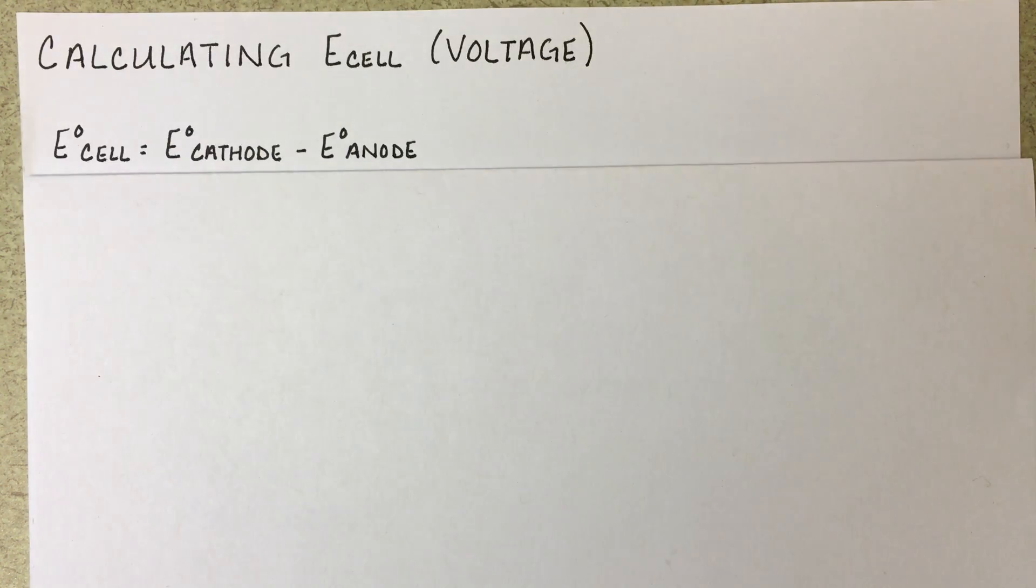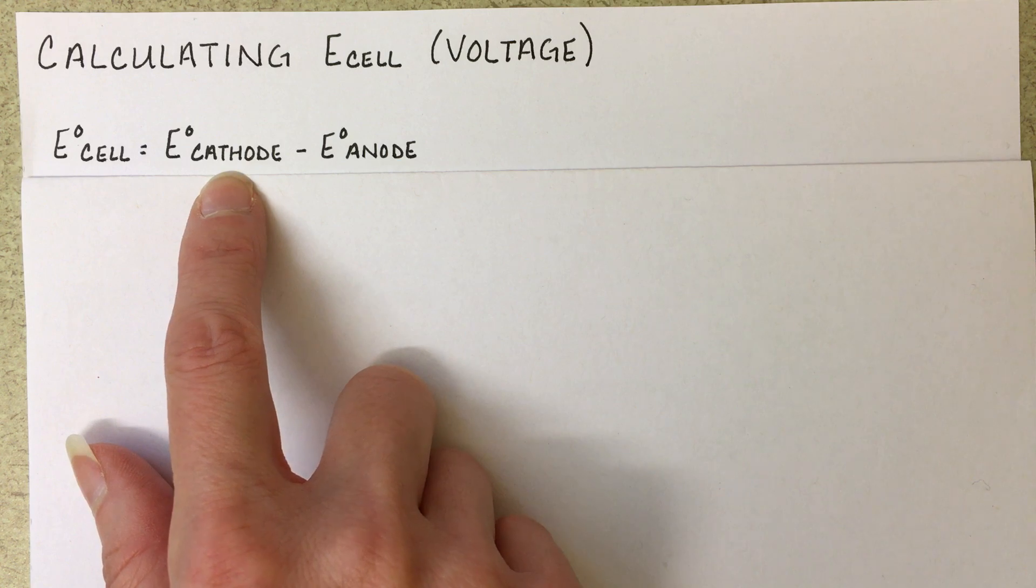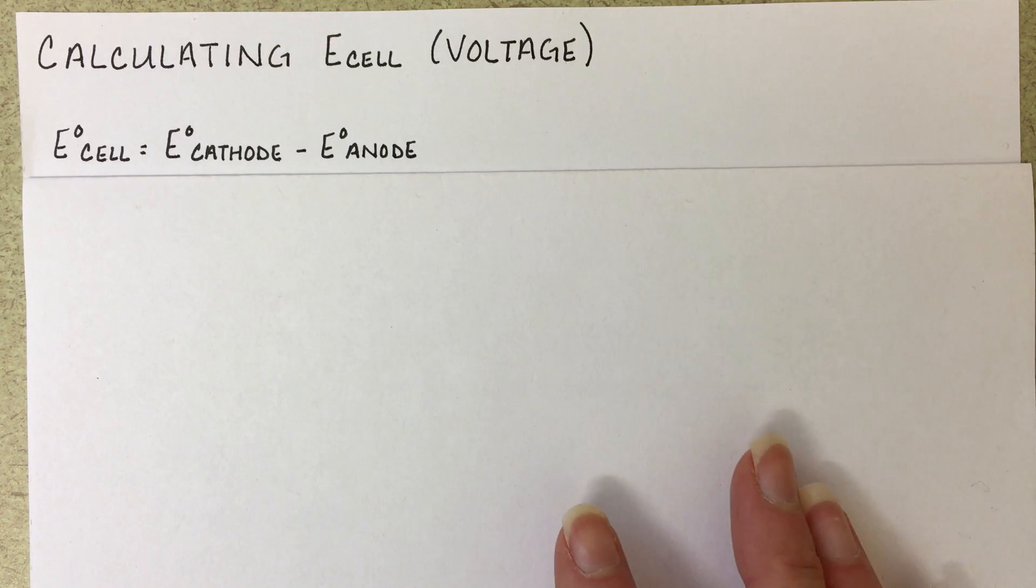To do this, we're going to use the equation: E-cell equals the voltage at the cathode minus the voltage at the anode.